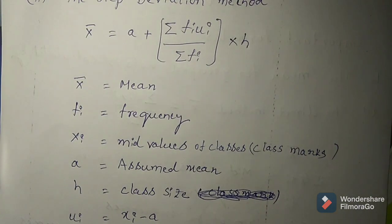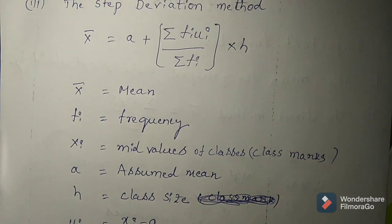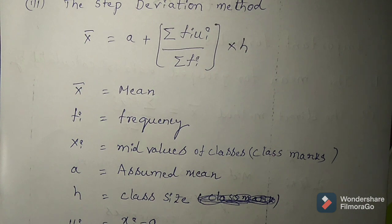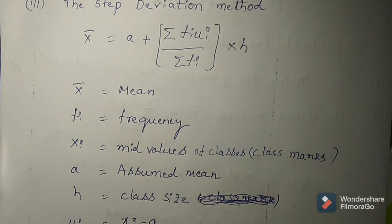In our chapter, you find mean using how many methods? Three methods. What are they? First one is the direct method, second one is the assumed mean method, and third one is the step deviation method. Read these formulas carefully and explain each term — these are compulsory, coming from two marks in our examinations. Then you can solve one problem using all three methods.